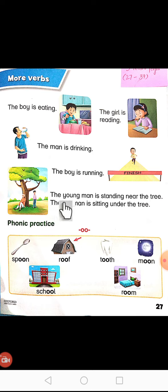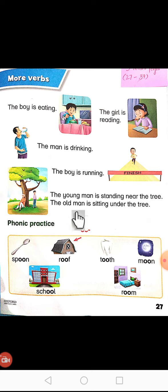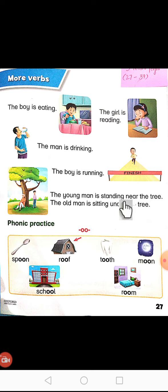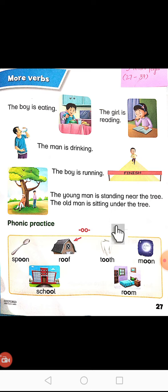The young man is standing near the tree. Y-O-U-N-G. The young man is standing. Jowahan aadmi — young kehte hain jowahan ko. Jowahan aadmi khada hua hai near the tree — drukht ke paas. Jowahan aadmi drukht ke paas khada hua hai.